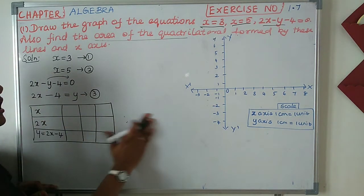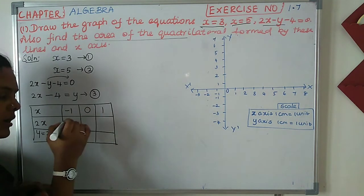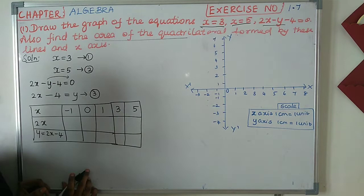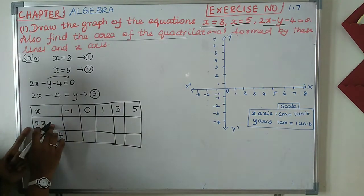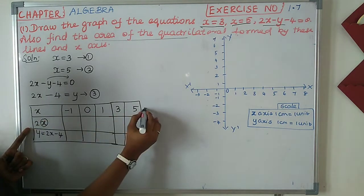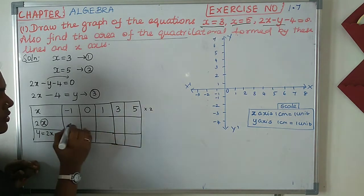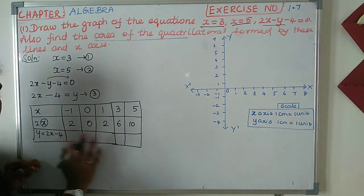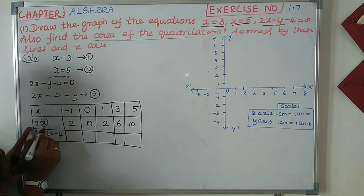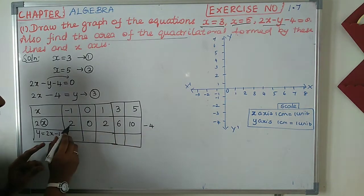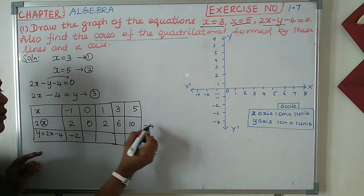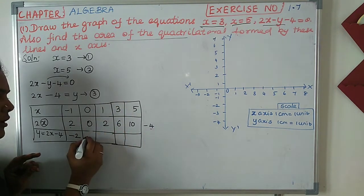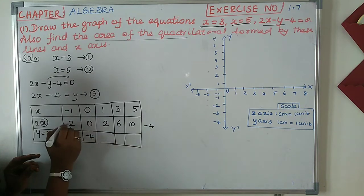We have to calculate the values. In the line, apply two — multiply 2x: negative 1 times 2 is negative 2; 0 times 2 is 0; 1 times 2 is 2; 3 times 2 is 6; 5 times 2 is 10. For the y row, apply y: negative 4 gives negative 4; two minus four is negative two; zero minus four is negative four.